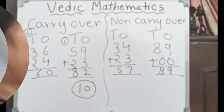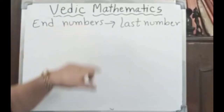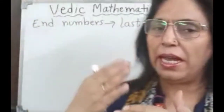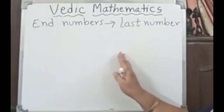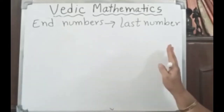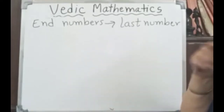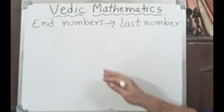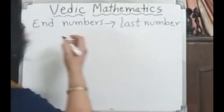The next sutra according to Vedic Mathematics is the end numbers. End number means the last number — the number in the ones place. You all know the place value of numbers: ones, tens, hundreds, thousands. For class two and three, I am explaining this. The end number is the last number from the right side. For example, in a number, six is the end number, or eight is the end number. In thirty-nine, nine is the end number.